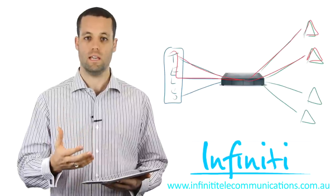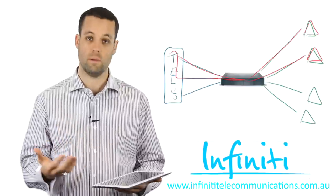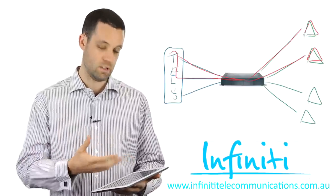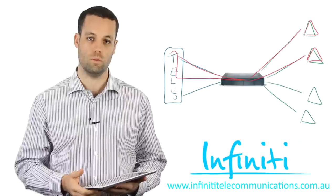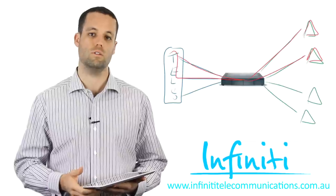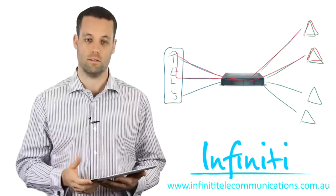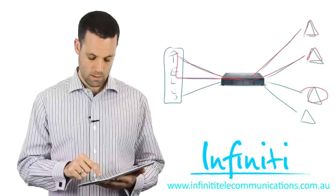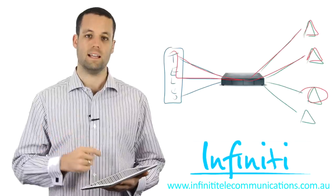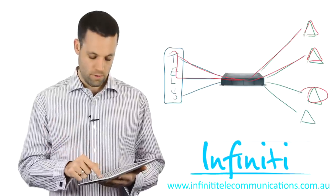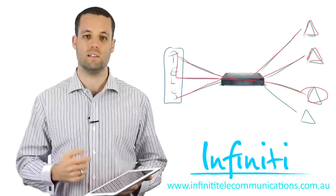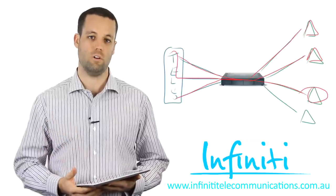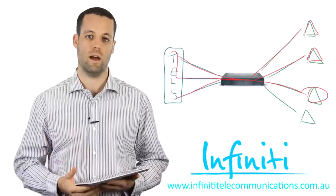But what happens if a staff member wants to make a call out? In this example right now on the screen, there are only two calls being used of our three lines. This person gets a dial tone on their phone, makes an outbound call, and it goes out on the third phone line with your service provider.